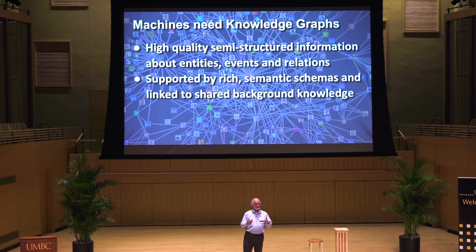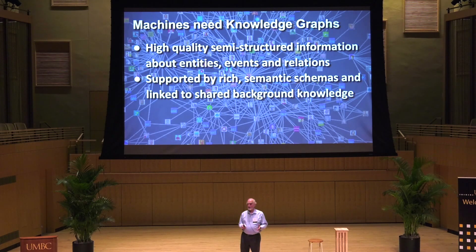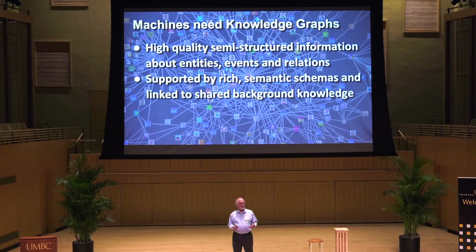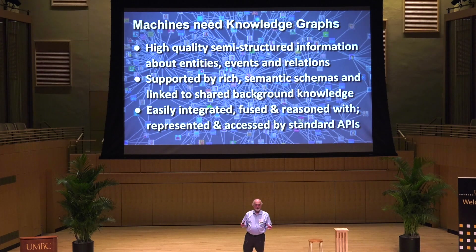Moreover, knowledge graphs are supported by rich semantic schemas that contain a lot of common sense knowledge. For example, you know that people are a kind of animal, so knowledge true for all animals is also true for all people. They're also linked to shared background knowledge — that could be in a system like Watson, Wikipedia, or the Google Knowledge Graph. Finally, information in a knowledge graph should be easily integrated, fused, reasoned with, and represented and accessed by standard APIs.